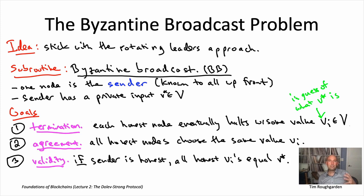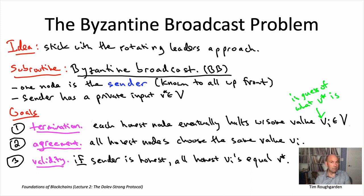So that's the Byzantine broadcast problem — this is how we talk about achieving broadcast functionality even in the presence of Byzantine faults. It should be the case that honest nodes always come to agreement, and moreover with an honest sender, their private input is accurately communicated to all of the honest nodes. I claim this is the subroutine we want to plug in to our rotating leader idea to get consistency and liveness for state machine replication. On the next slide, let's see that that really is the case.